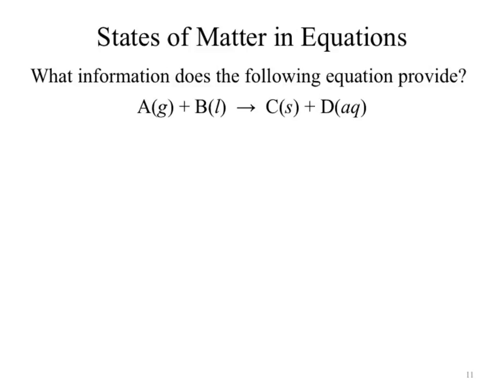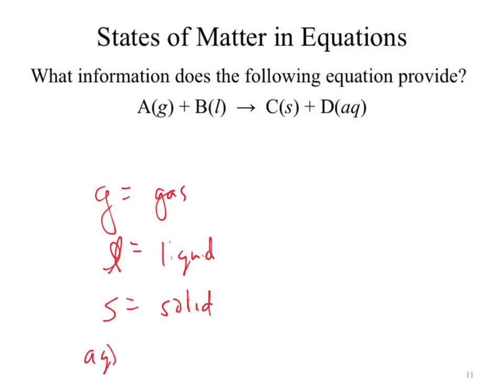When we look at a general equation, what information is supplied? We have the phase: G stands for gas, L for liquid, S for solid, and AQ. What does AQ mean? It means aqueous — dissolved in water. By seeing AQ, I'm not just saying it's dissolved; I'm saying it is dissolved in water. So water is now also implied within this reaction, even though it's not explicitly written.